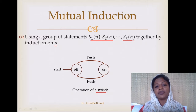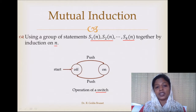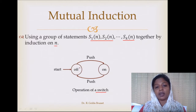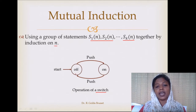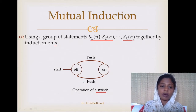Initially we are in the off state. When we push the switch, the machine will go from the off state to the on state — you can imagine the light turning on. Then when you push the switch once again, the light will turn off. This is the operation of a toggle switch.